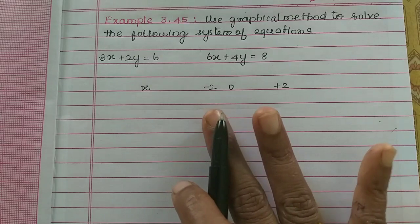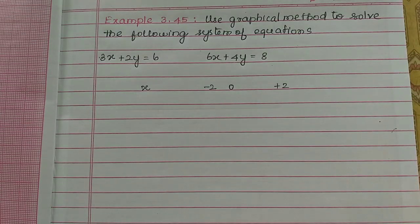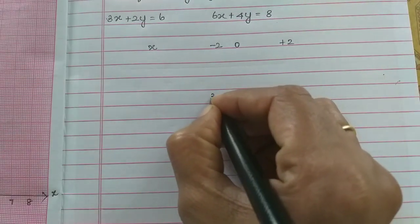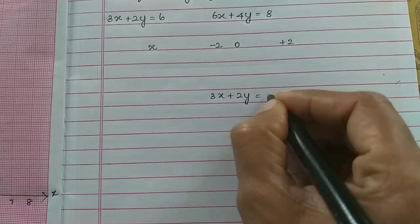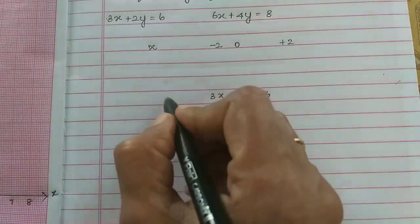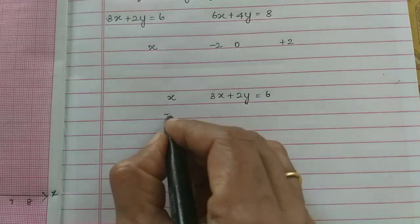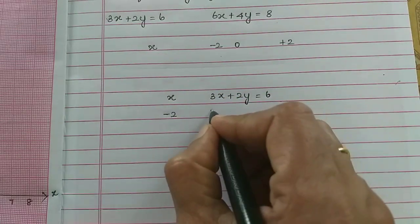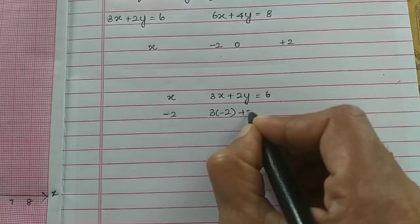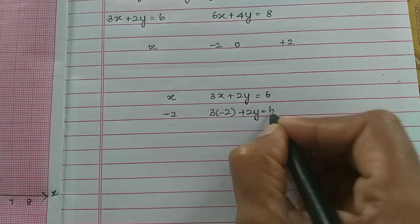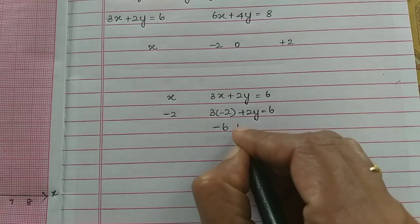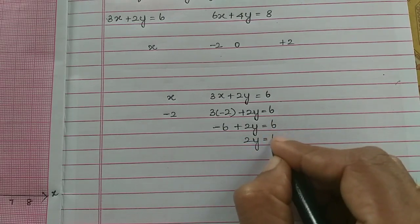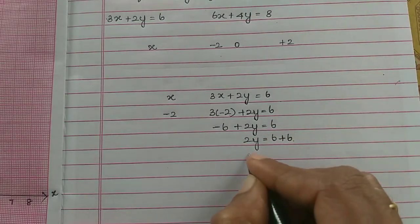I will write the equation. How do you get the equation? The first equation is 3x plus 2y is equal to 6. Now, the x value is minus 2. So in this equation, minus 2 is substituted. 3 times minus 2 plus 2y is equal to 6. Minus 6 plus 2y is equal to 6.